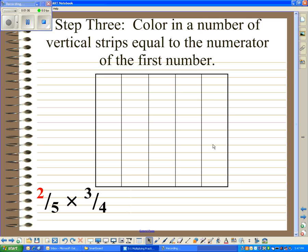Step three is to color in a number of vertical strips equal to the numerator of the first number. The numerator of the first number is two, so I'm going to color in two vertical strips.